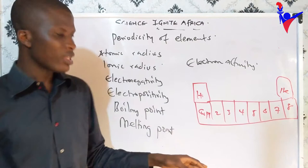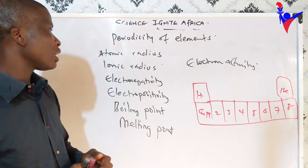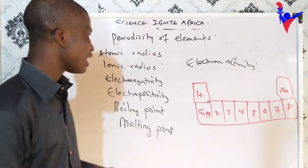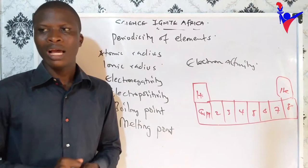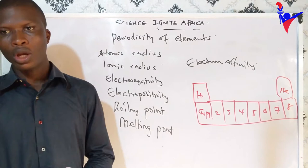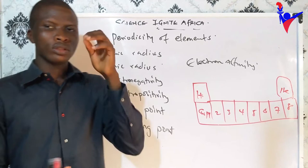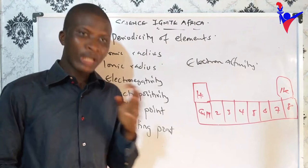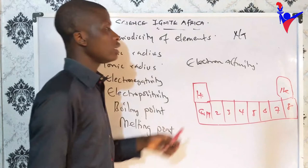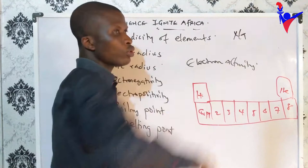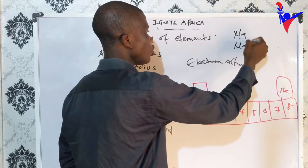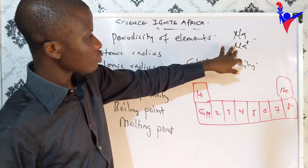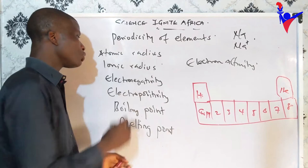When talking about atomic radius: it is the distance between the nucleus of an atom and its outermost shell. Ionic radius is the same measurement but for a charged atom rather than a neutral one. For example, take a neutral sodium atom — measuring from the nucleus to the outermost electron shell gives the atomic radius. When sodium forms an ion, that measurement becomes the ionic radius.